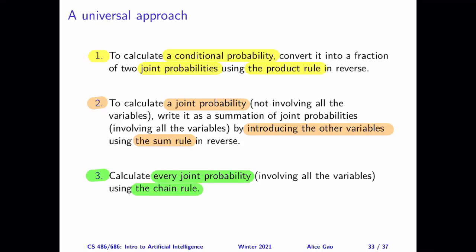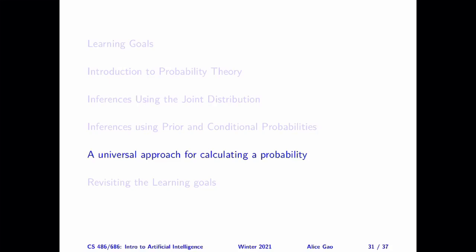That's it for the universal approach. Let me do a quick recap. The universal approach has three steps. Step one: take a conditional probability and convert it into an expression involving several joint probabilities. Step two: take each joint probability and introduce all of the missing variables into the expression. Step three: calculate each joint probability using the chain rule. After watching this video, you should be able to calculate a conditional or joint probability given several probabilities using this universal approach.